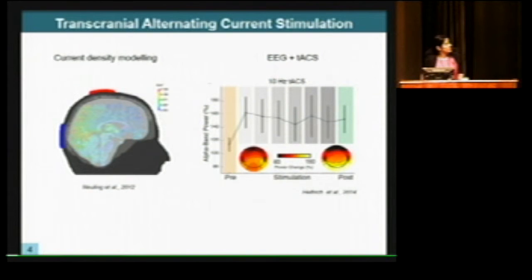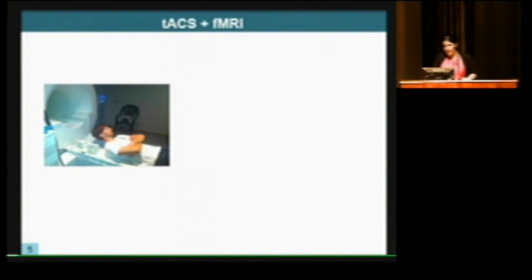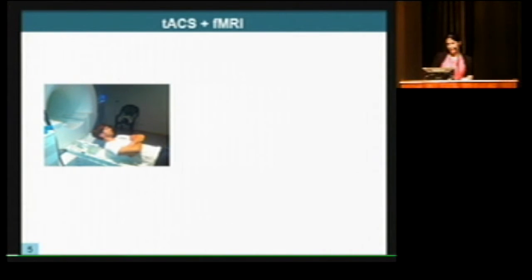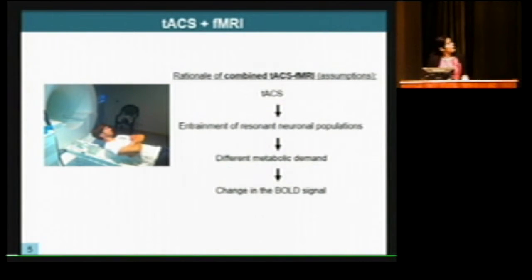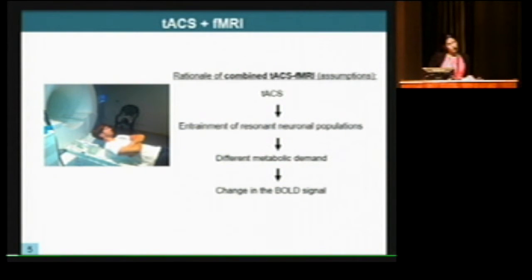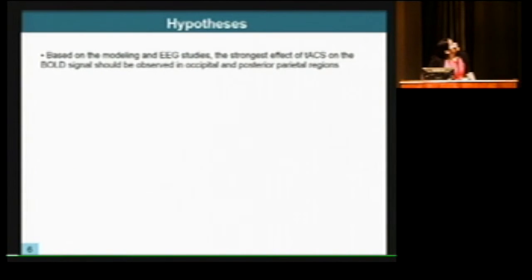We took a different approach and combined TACS with fMRI, which is feasible because the electrical artifacts are not so significant with TACS and it offers the possibility of looking at subcortical structures as well. With fMRI you cannot see oscillations directly, but our assumption was that if TACS entrains a neural population at its resonant frequency, this could induce a different metabolic demand in that area, resulting in a change in the BOLD signal.